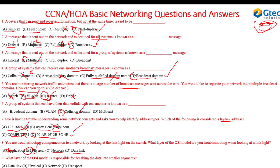Question nine: what layer of the OSI model is responsible for breaking data into smaller segments? At each layer there are different data types: physical layer uses bits, data link layer uses frames, network layer uses packets, and transport layer uses segments. So the answer is the transport layer.